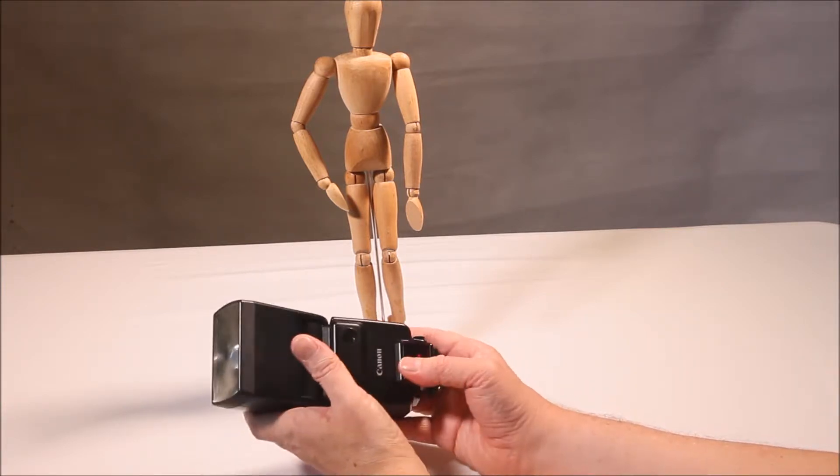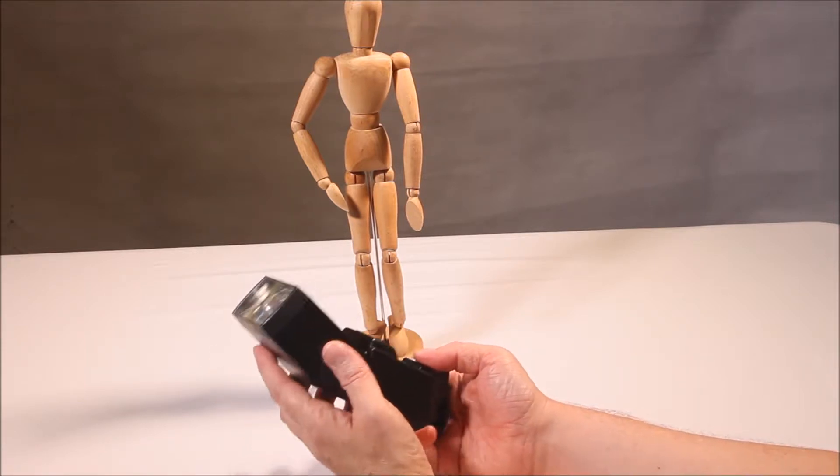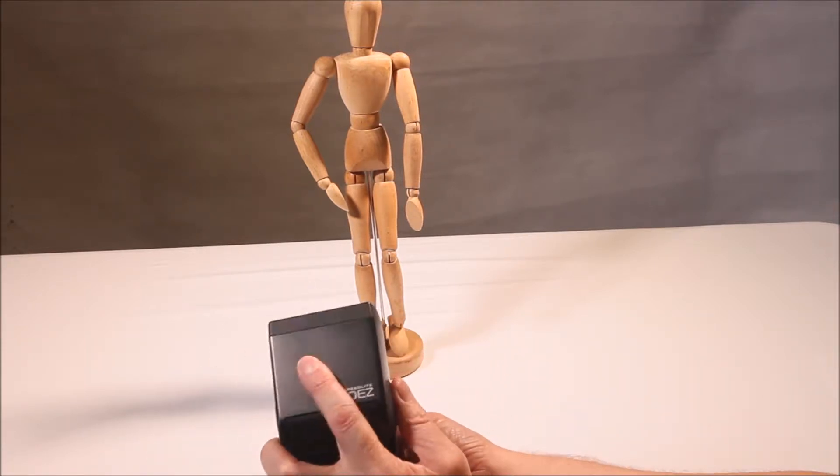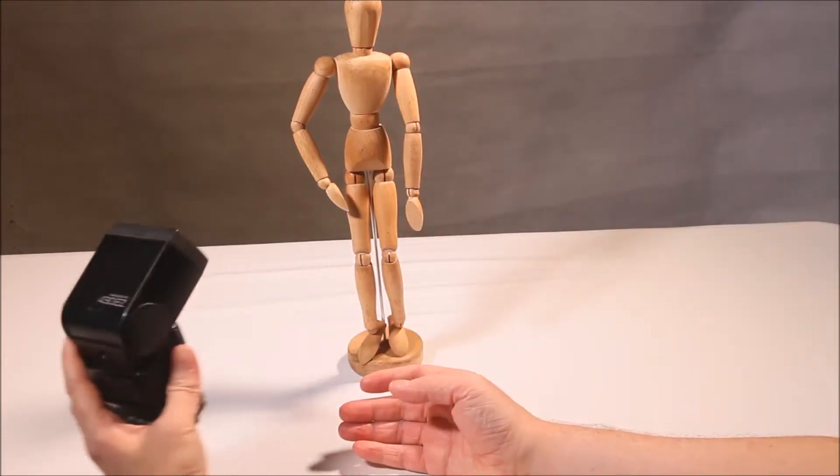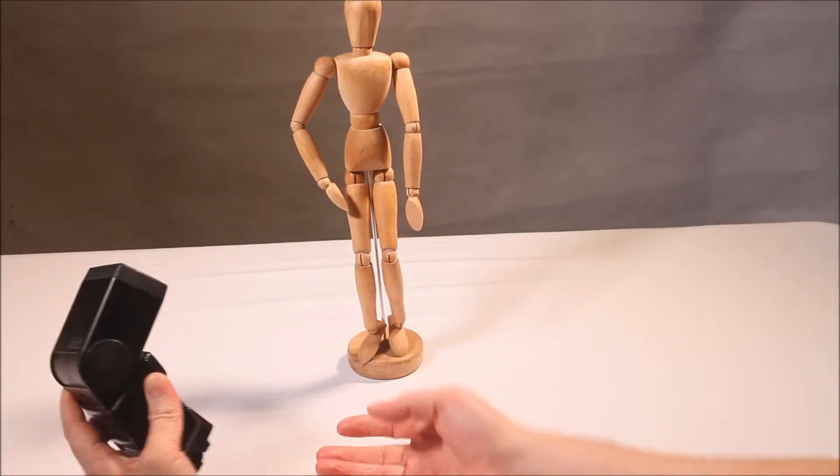When the flash is on the camera, the part of the subject that is lit is directly in front of the camera. So if the camera was here, the part of Dave that would be lit would obviously be there. If the camera was there, it would be there, and so on.